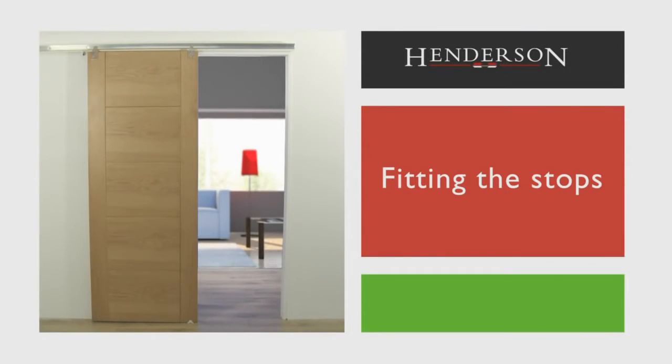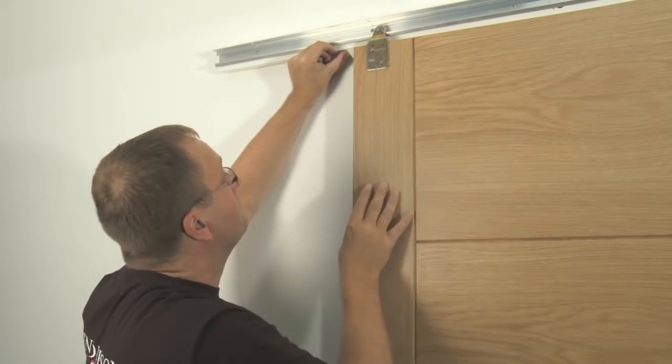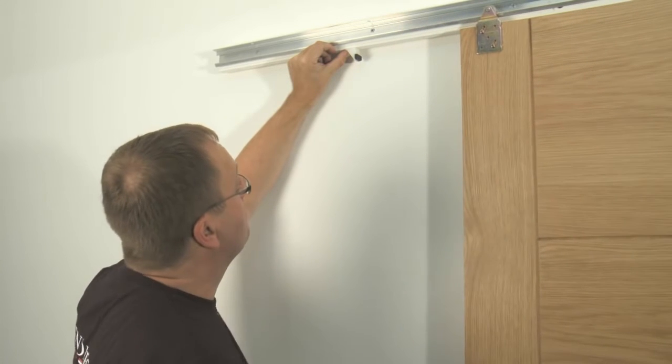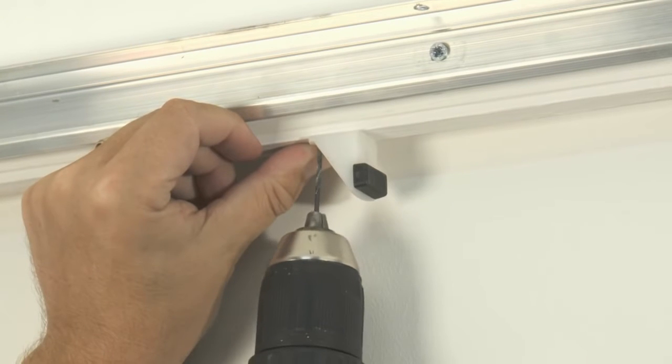Fitting the stops. Now we need to attach the stops so that the door doesn't run out of the track in operation. Locate a suitable position for the stops and fix them into place.